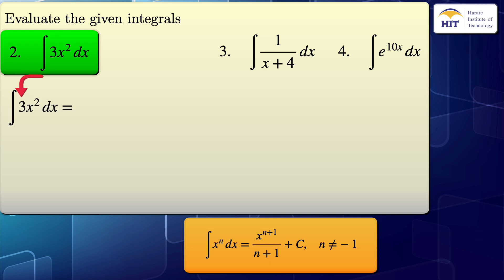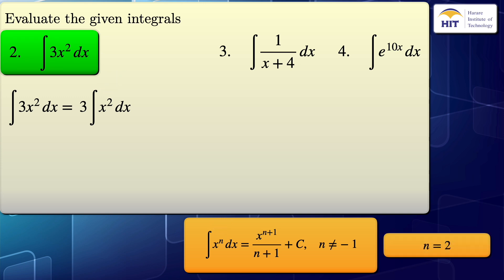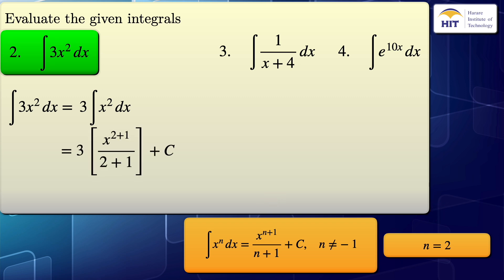When we have a constant in the integral sign, we can factor it out and remain with 3 times the integral of x squared with respect to x. As you can see, our integral is in the form x to the power of n with respect to x. By comparing these two, we can see that our n is equal to 2. Substituting this n into the formula,